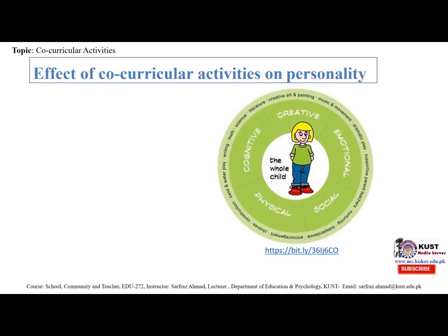There are some effects of co-curricular activities on personality. The whole child is comprised of cognitive, creative, emotional, social, and physical dimensions. Co-curricular activities have a stronger impact on developing adaptation, self-confidence, honesty, social ability, sympathetic attitudes, social obligations, and sense of responsibility — and this impact is stronger among male secondary school students than female secondary school students.